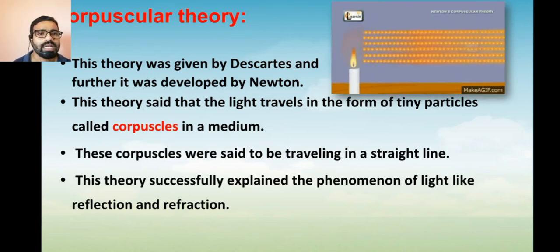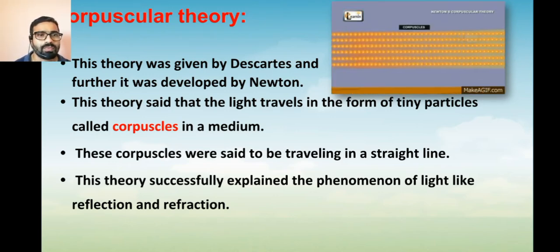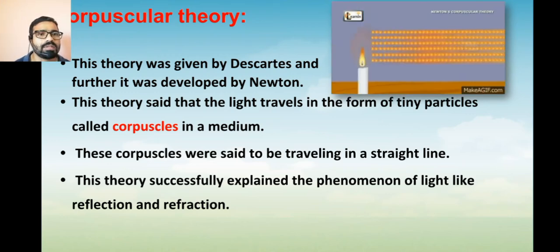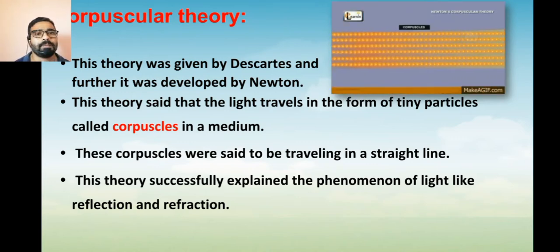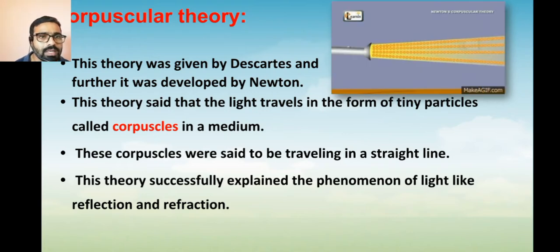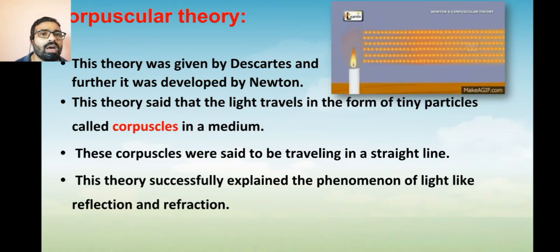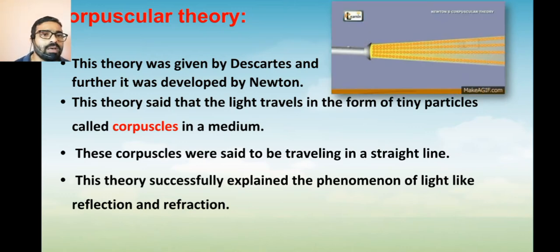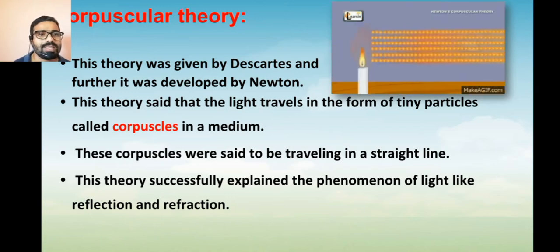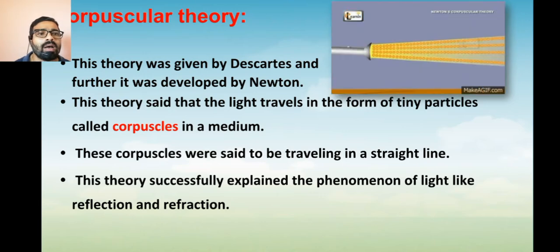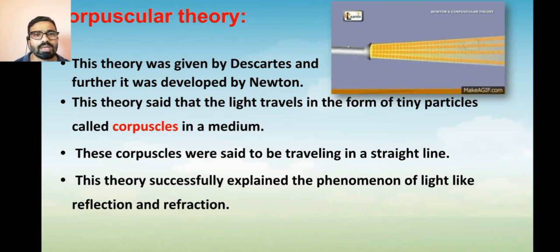In the corpuscular theory, you can see an animation showing light coming from the sun, from a candle, and from a torch. Ball-like structures are shown coming from these sources, traveling in a wave-like arrangement. These represent that light travels in the form of particles — this is the corpuscular theory.